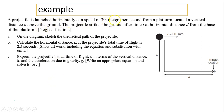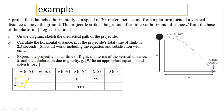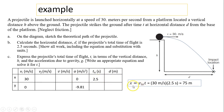Another question. A projectile is launched horizontally at 30 meters per second from a platform at vertical height H above the ground. It strikes the ground at time T and horizontal distance D. Part A: sketch the theoretical path — it should be a parabolic path. Part B: calculate horizontal distance D if total time is 2.5 seconds. Since Vix equals 30 and Ax equals zero, D equals Vix times t equals 30 times 2.5 equals 75 meters.